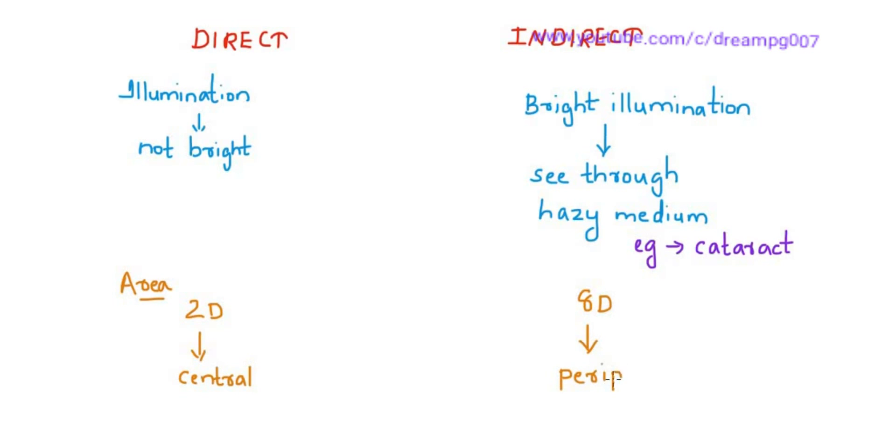2 disc diameters means that the central portion of the retina is visible, whereas in indirect, the peripheral retina up to ora serrata is visible.